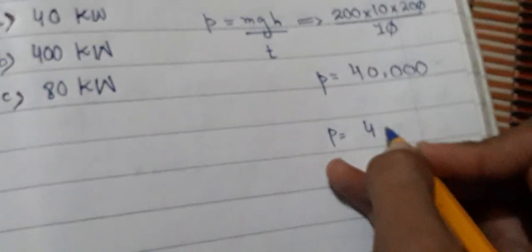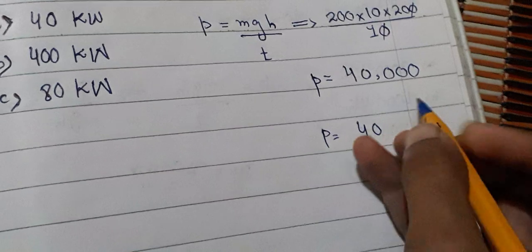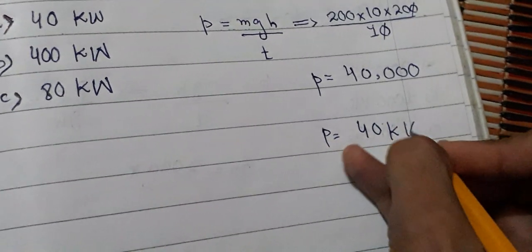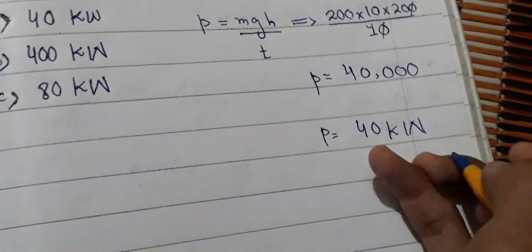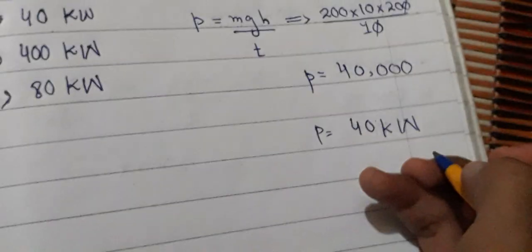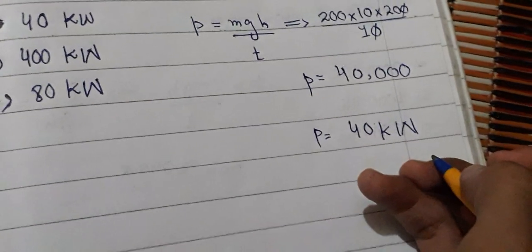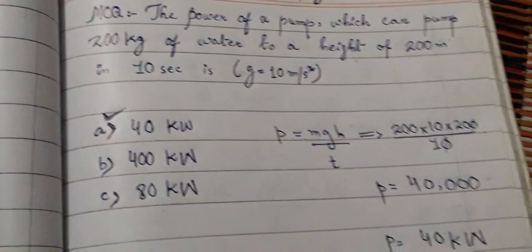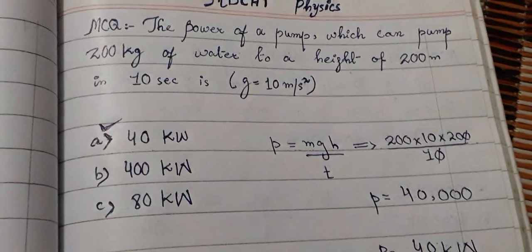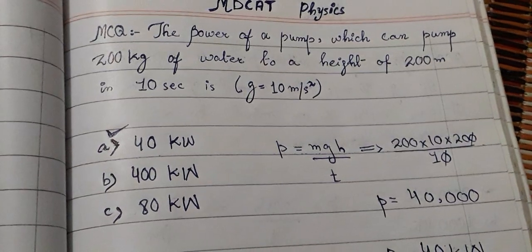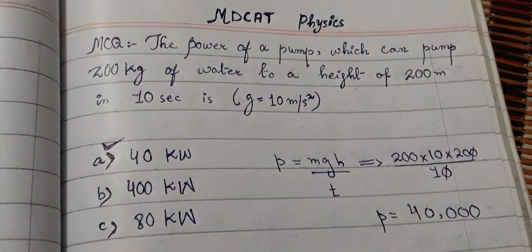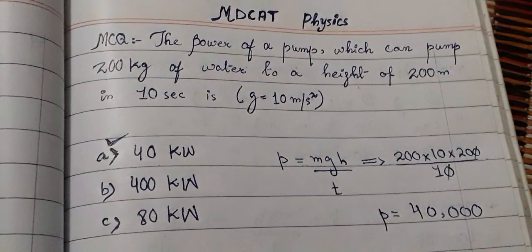We keep 40,000 and convert the unit. The power is 40 kW, which is the correct answer. Viewers, if you like this please like, comment, and subscribe to the channel. Allah Hafiz.